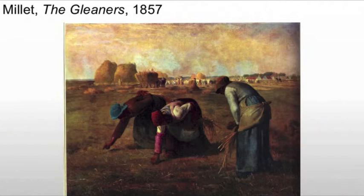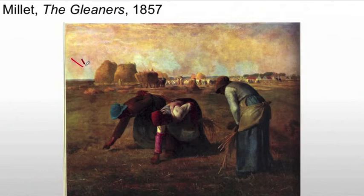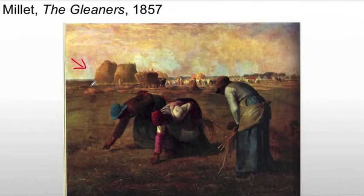A juxtaposition — an element of class. That's what he's trying to show us. We see that juxtaposition most importantly when we look at the farmer's harvest in the background. Look at all that wheat — giant piles everywhere. He has lots of people working for him, a massive manor house or farmhouse in the distance, tons and tons of food. Now look at how little they have. They probably couldn't cook a loaf of bread with the amount they've picked up.